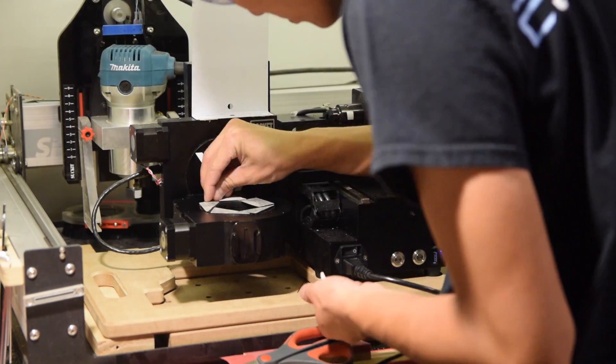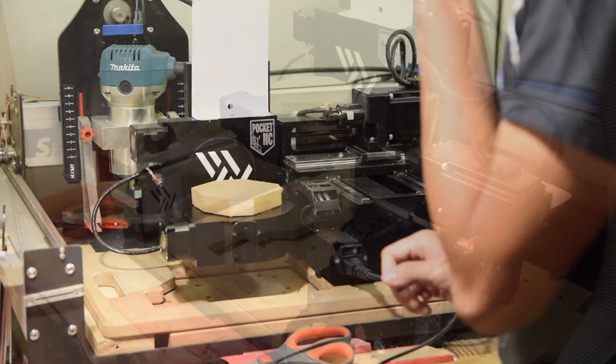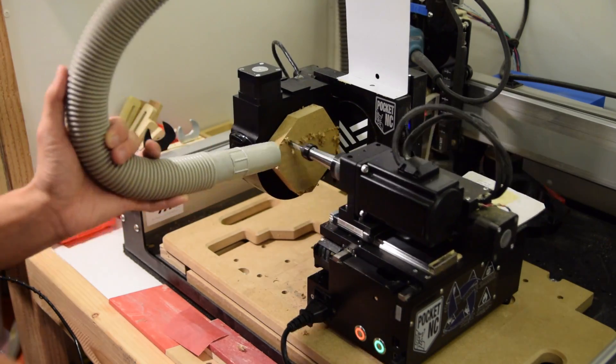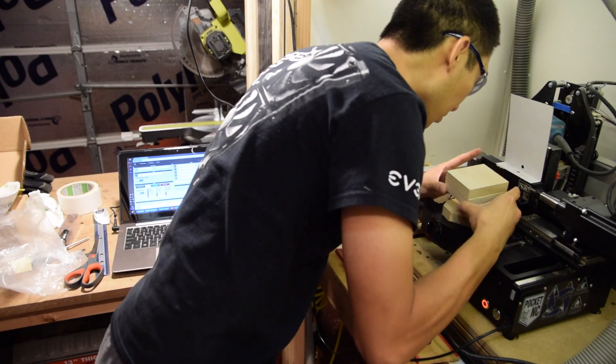To mount it on my Pocket NC, I first taped down a sacrificial MDF board to elevate my maple off the b-table. I would face off this piece so I would know exactly how thick it was. As an added benefit, it would show me where the center of the platform was. Then I taped down my maple stock.